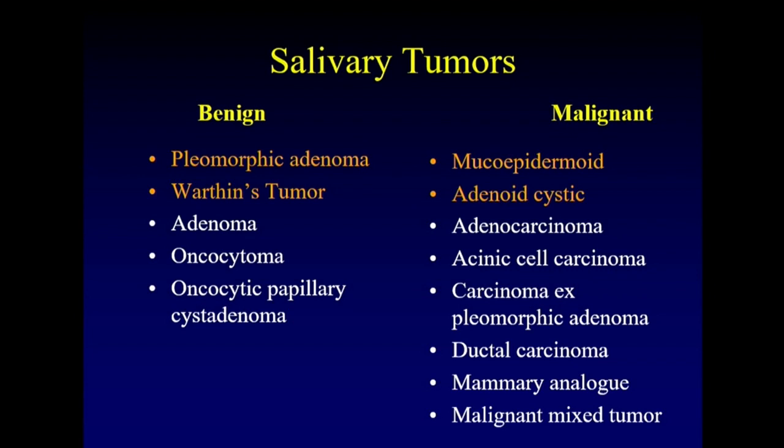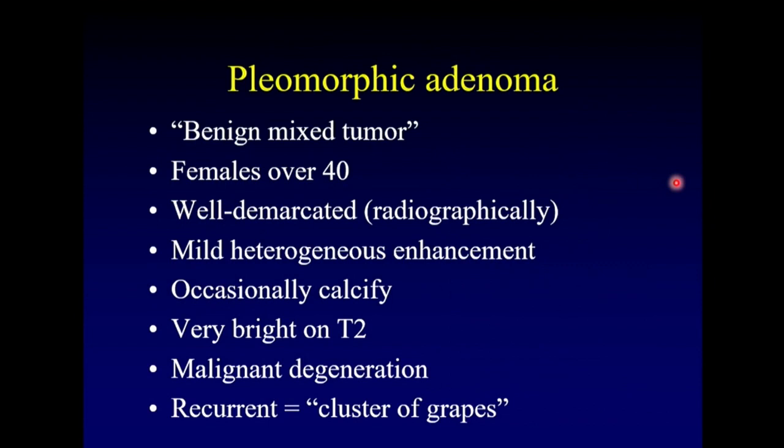On the malignant side, there is an even longer list of potential tumors, but two are worth focusing on: mucoepidermoid carcinoma and adenoid cystic carcinoma. We'll also briefly mention carcinoma ex pleomorphic adenoma because it's an important concept, but those two are the most common and worth studying most.